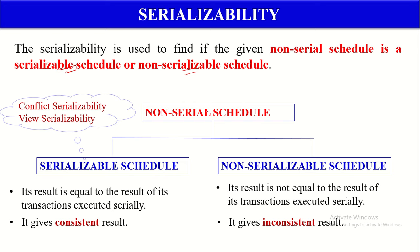We can classify the Non-Serial Schedule into two types: Serializable Schedule and Non-Serializable Schedule. A Serializable Schedule provides a consistent result — that is, its result is equivalent to the result of its transactions executed serially. Whereas a Non-Serializable Schedule always gives an inconsistent result, meaning its result is not equivalent to serial execution. Since it produces inconsistent results, this type of Non-Serializable Schedule should not be permitted to execute.